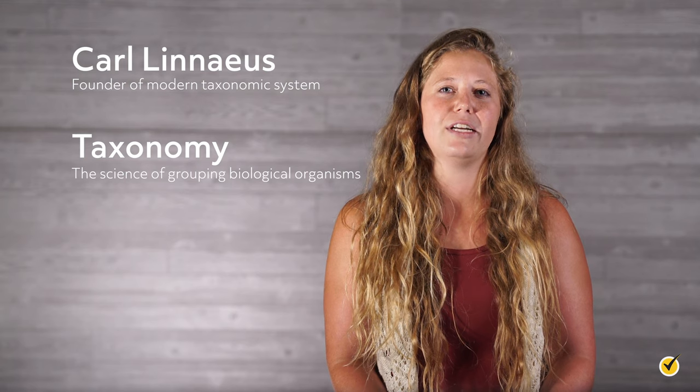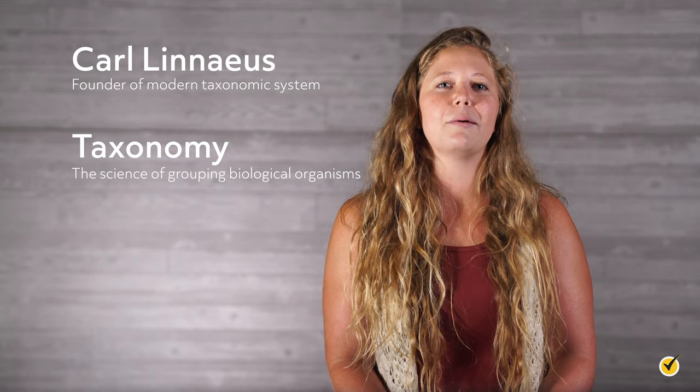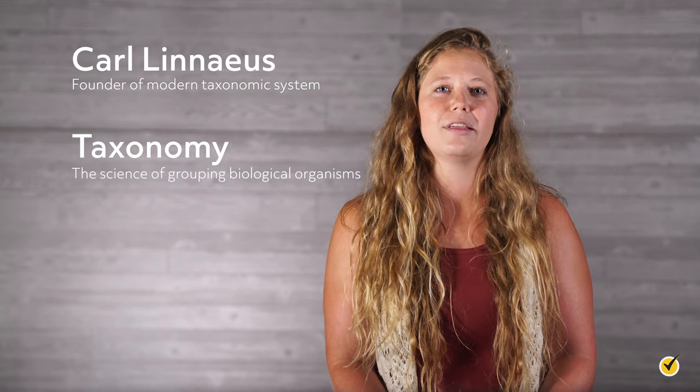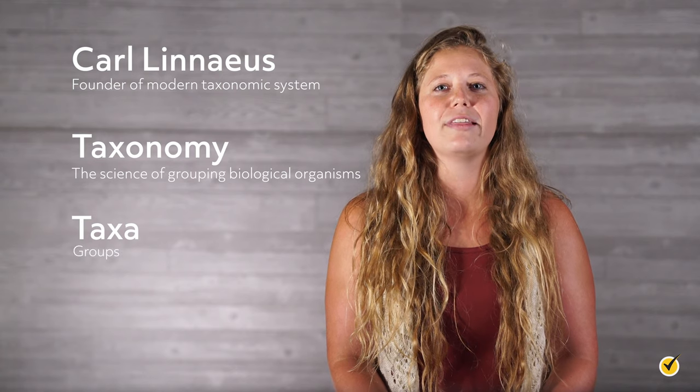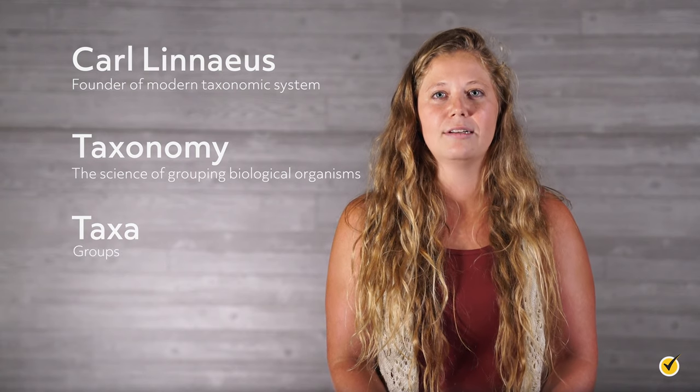Linnaeus used his observations about plants and animals to sort them into taxa, or groups, so that everything was simplified and organized. Even though Linnaeus's system was morphology-based and came before we understood genetics, the framework is still in use. Furthermore, the system is always being updated as scientists learn more about genetics and discover new species.